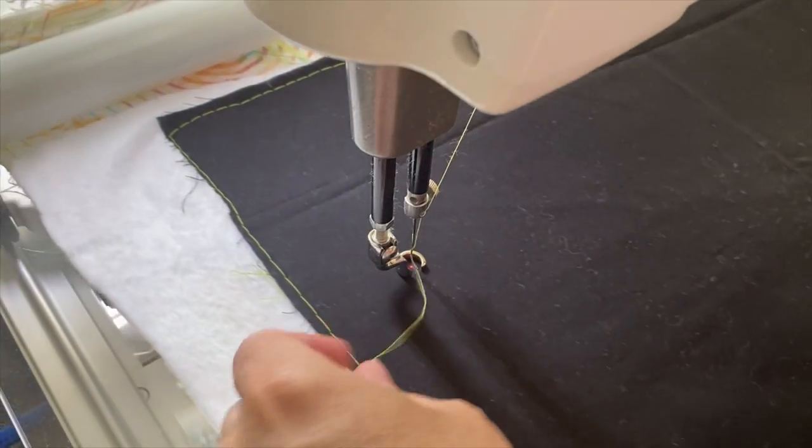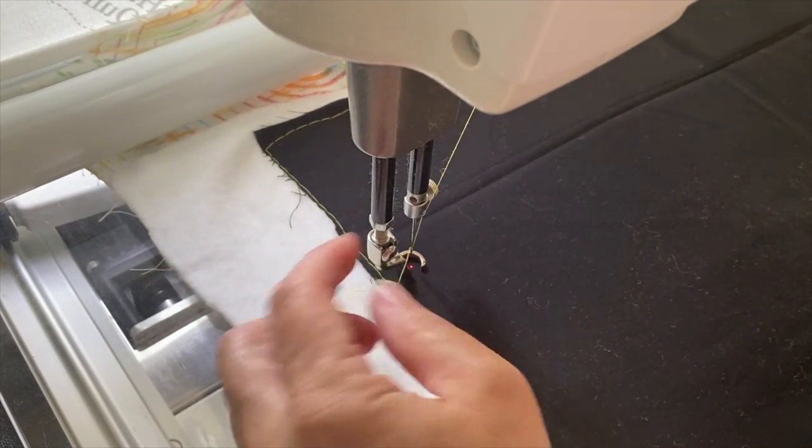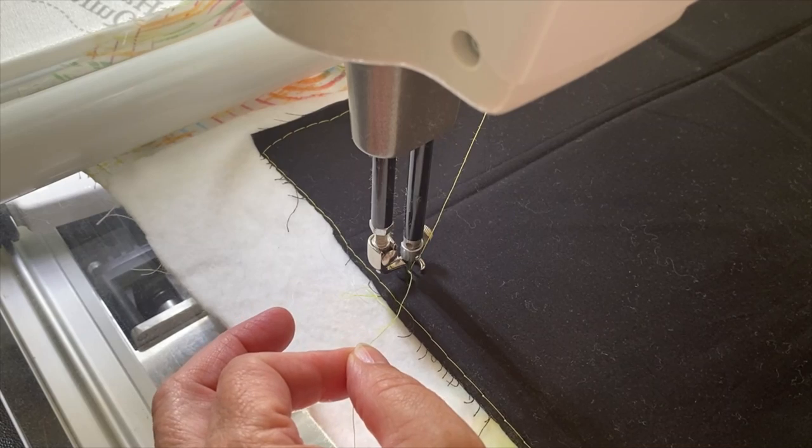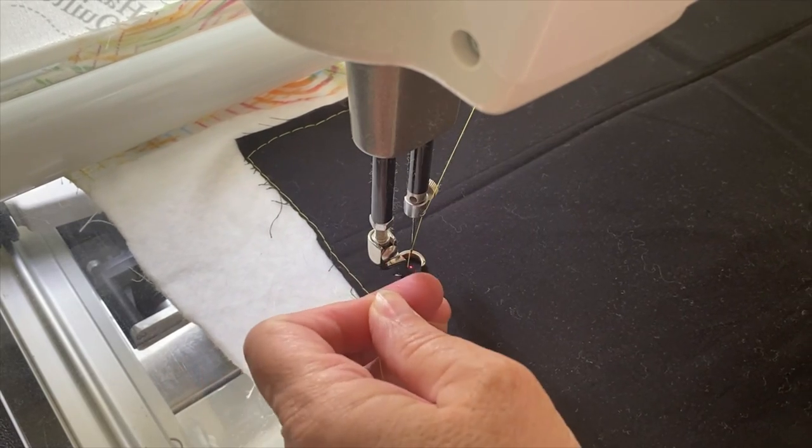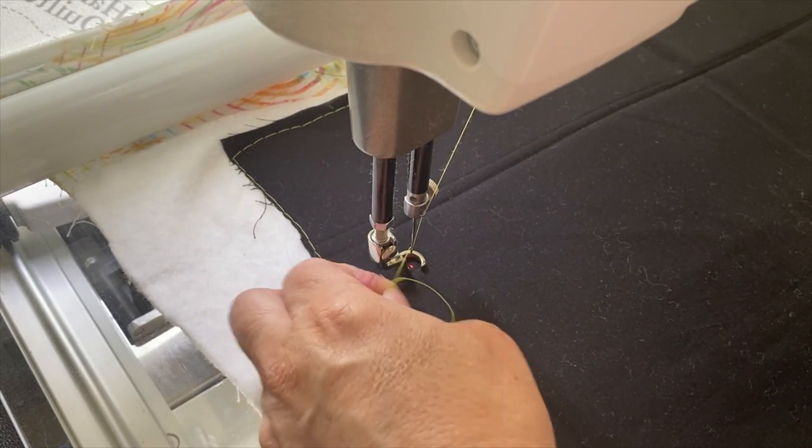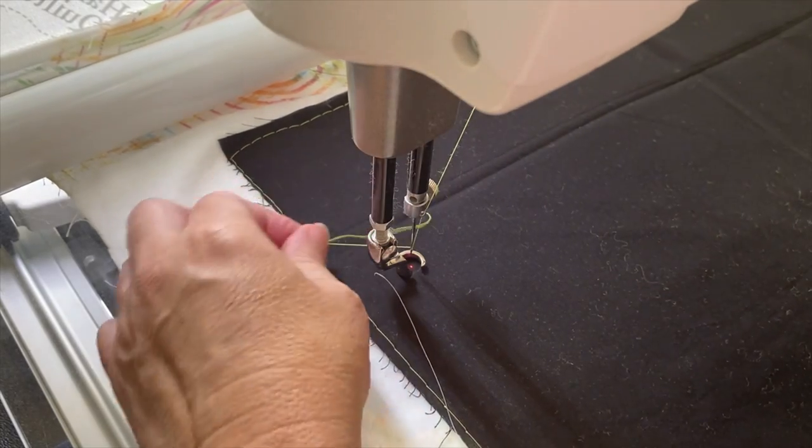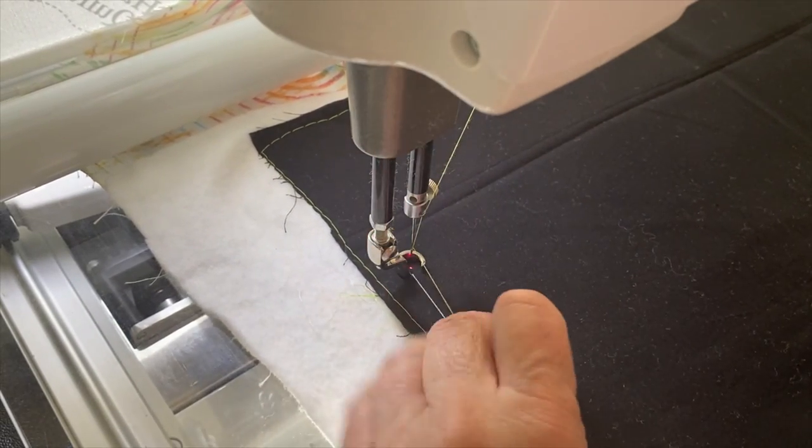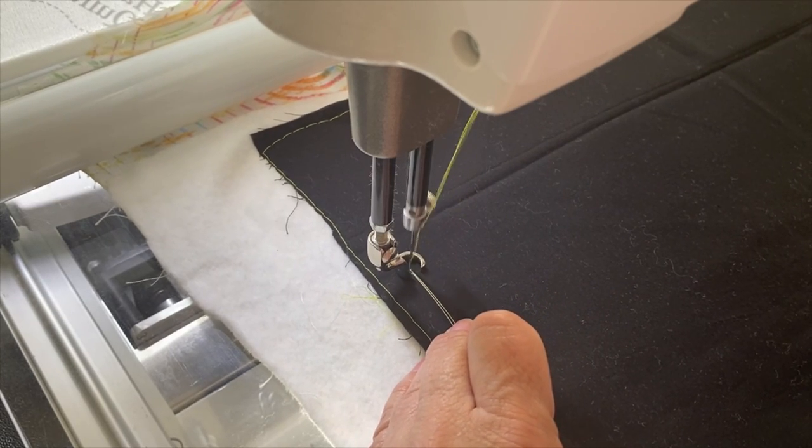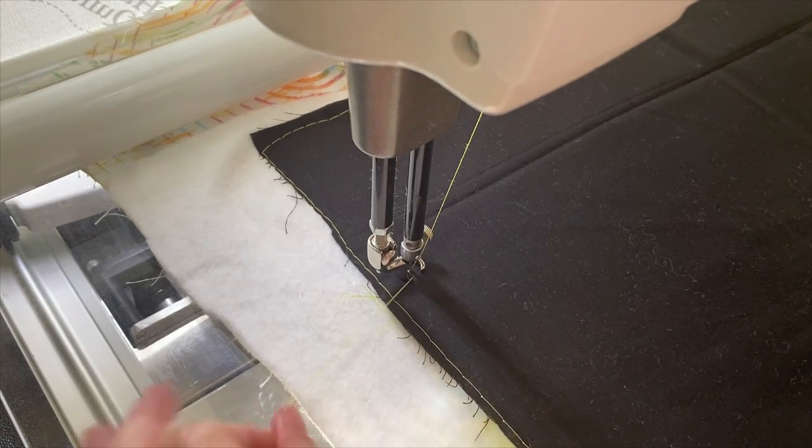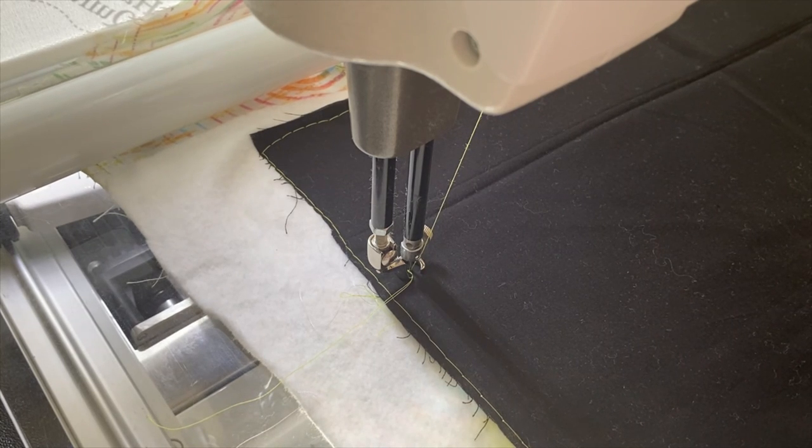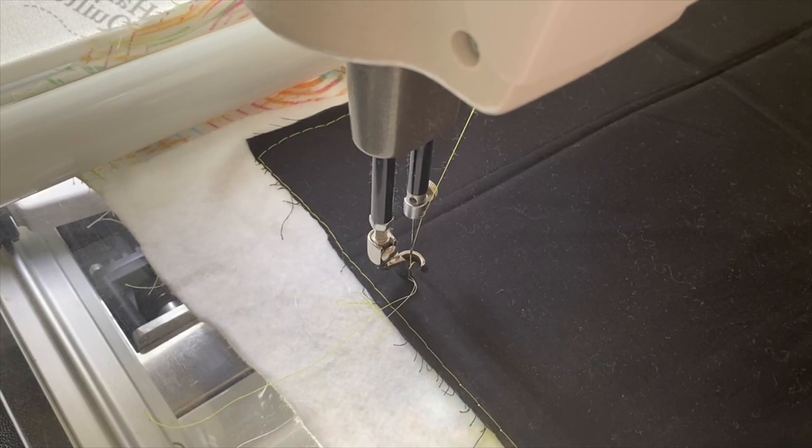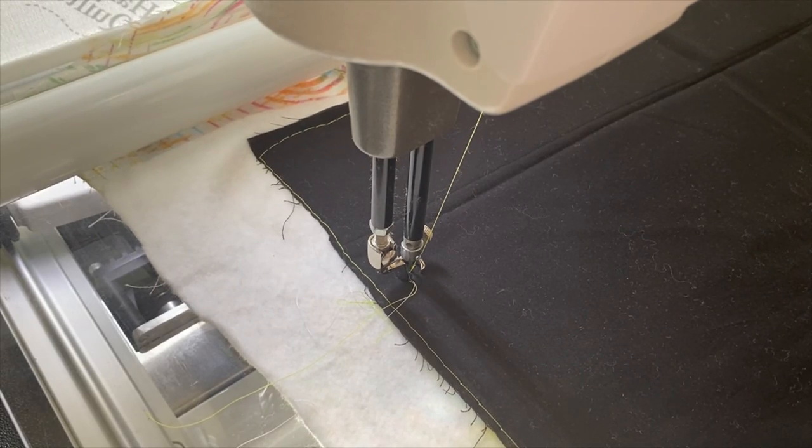Okay let's start with the basic meander. And don't forget to bring your bobbin thread up, so holding onto the tail, needle down, needle up, pull your machine away a little bit and pull that bobbin thread up. Then you want to hold onto both tails at the same time and take a couple stitches and this will lock your thread in place. Okay so let's go for the basic meander. Remember it's hills and valleys. Let me turn my basting stitch off first.